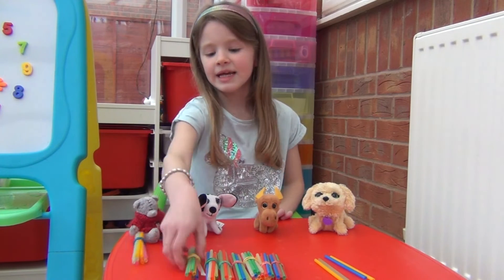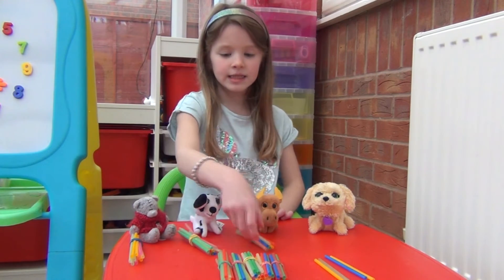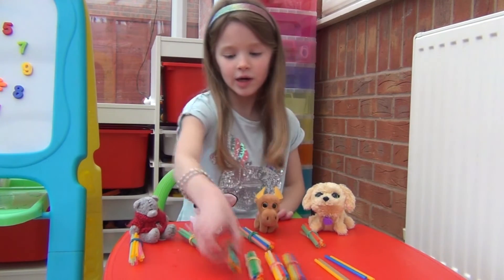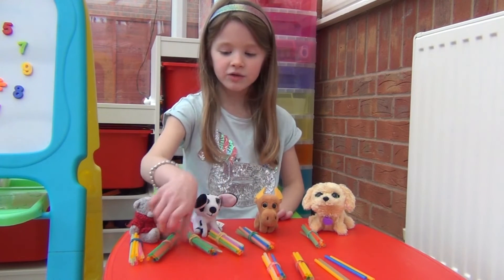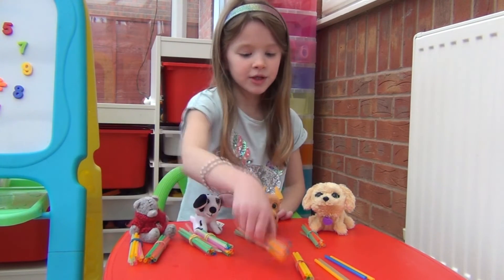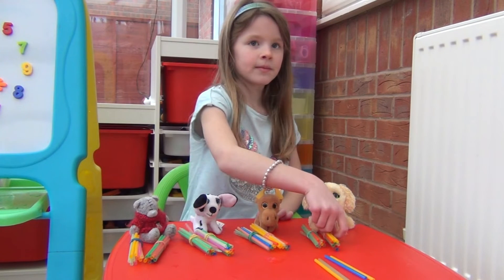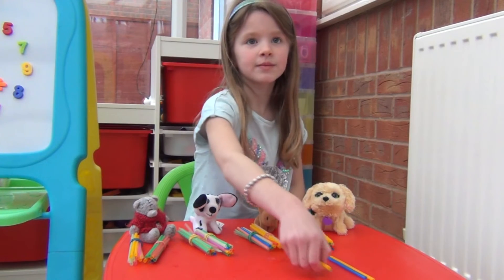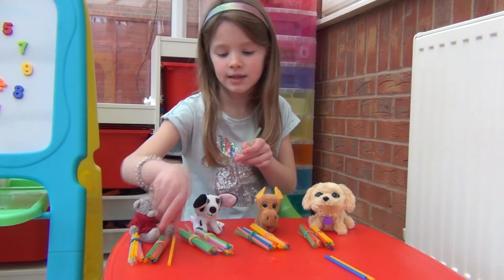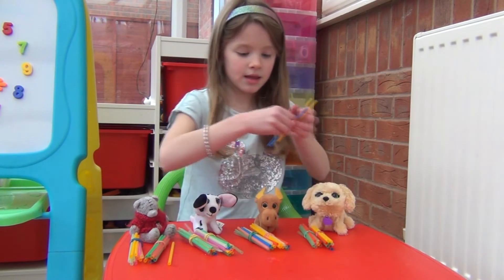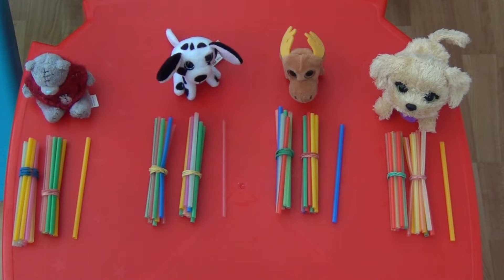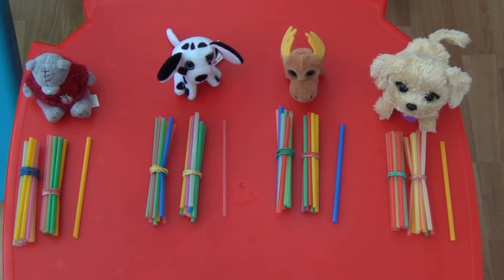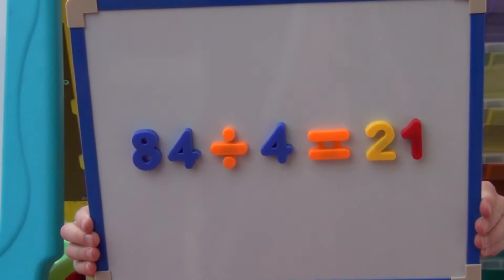I'm going to start by sharing the 8 tens between my 4 teddies and carry on until I've run out of the bundles of 10 straws. Now each teddy has 2 tens. Now I'm going to divide the 4 ones between my 4 teddies. Each teddy now has 2 tens, which is 20, and 1 one, which together make 21. So 84 divided by 4 equals 21.